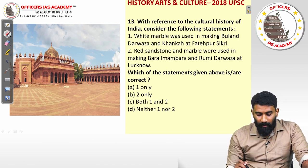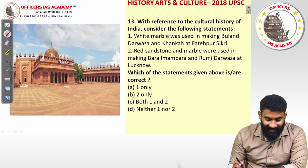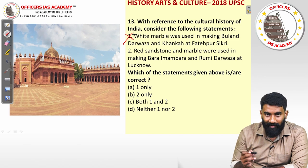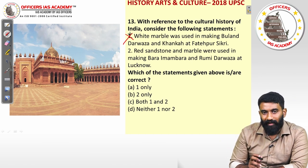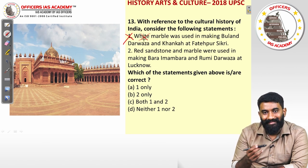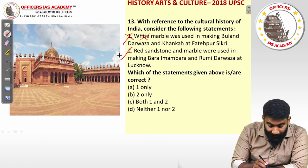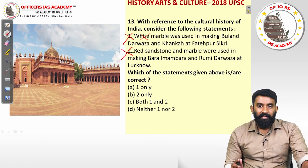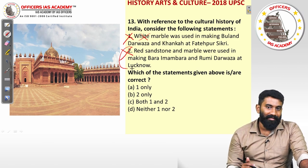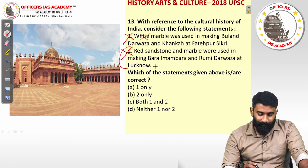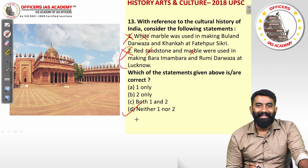Question thirteen: consider statements about cultural history of India. First, white marble was used in making Buland Darwaza at Fatehpur Sikri — that is wrong; red sandstone was used. Akbar built Buland Darwaza to commemorate his victory over Gujarat. Second, red sandstone and marble were used in making Bara Imambara and Rumi Darwaza — also wrong; brick and lime were used. Both statements are incorrect — the answer is option D, neither one nor two.